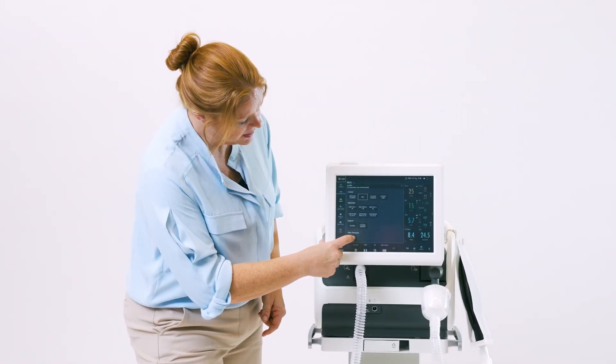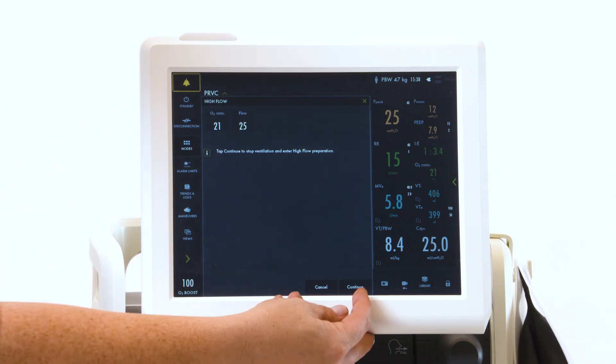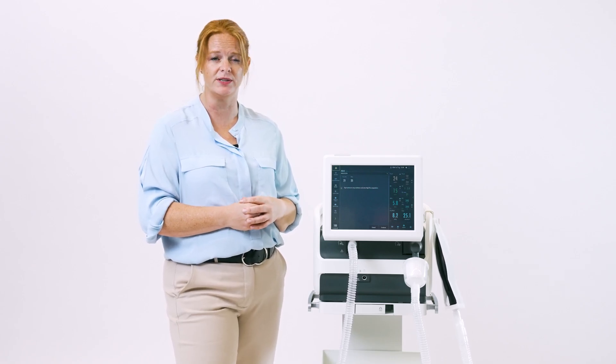High Flow is located at the bottom of the screen. Touch and your settings will come up. Cancel and Continue are down here. Remember, if you touch Continue, it does stop ventilation to go into High Flow Therapy.